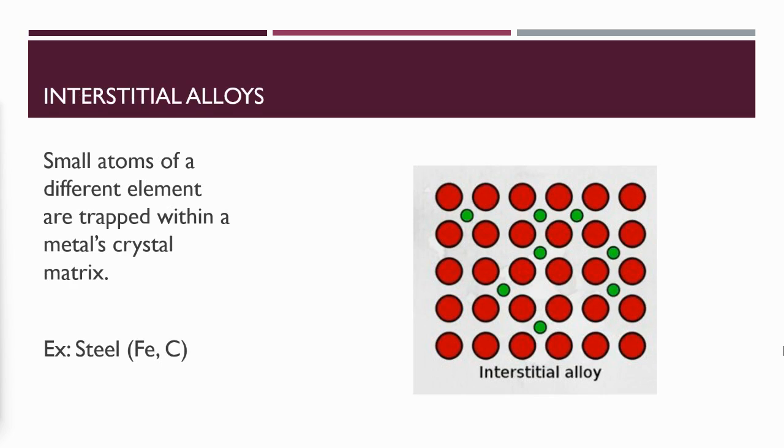The other type of alloy is interstitial alloys. In interstitial alloys, small atoms of a different element are placed in between the metal of the crystal matrix, which gives rise to a stronger substance. For instance, steel. Steel is primarily iron, but carbon is placed into the iron matrix. Those carbon atoms are smaller than the iron atoms, so they fit in between the iron atoms.